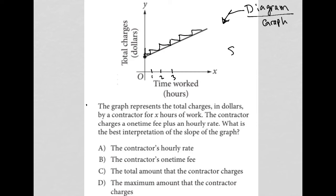My slope represents the rise over the run of the graph, but that rise over run - the y-axis is the total charges divided by the total hours. So the slope represents how much money this contractor is charging per hour, because per means divided by.